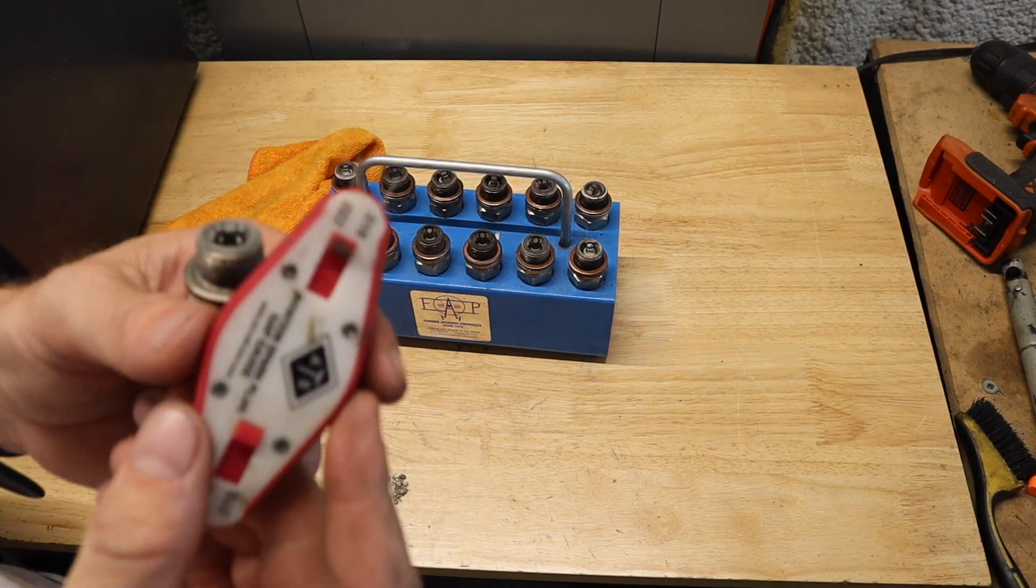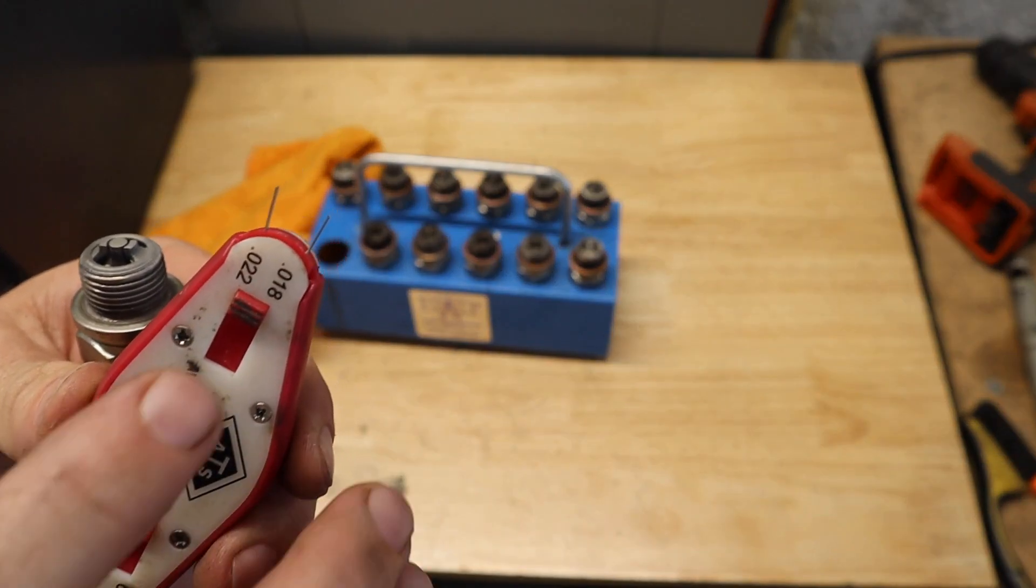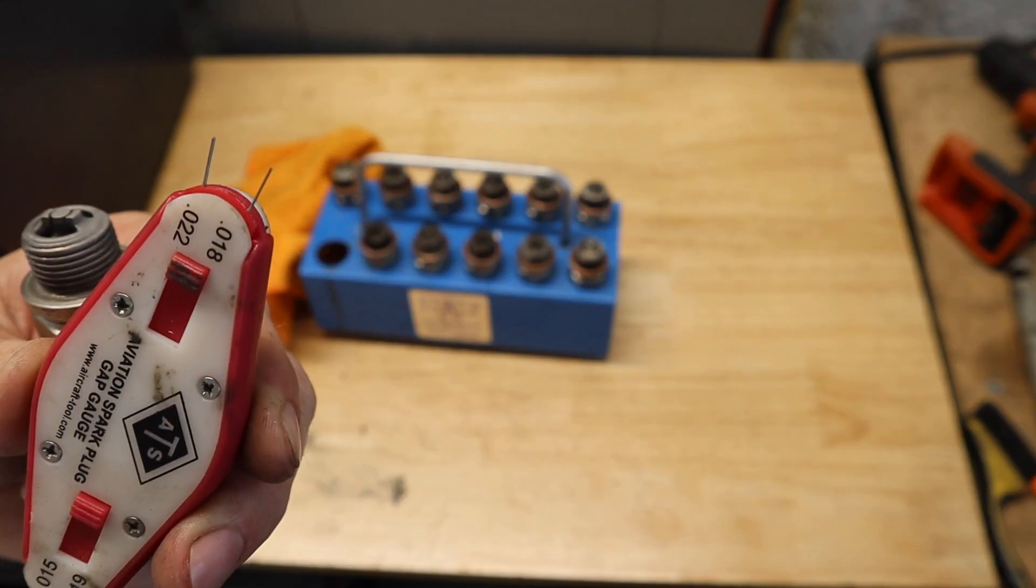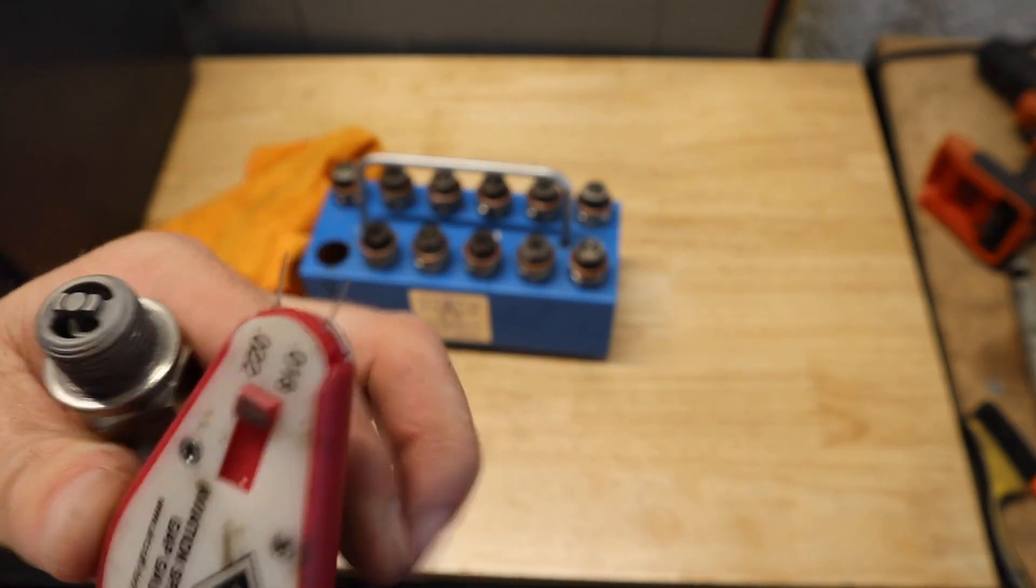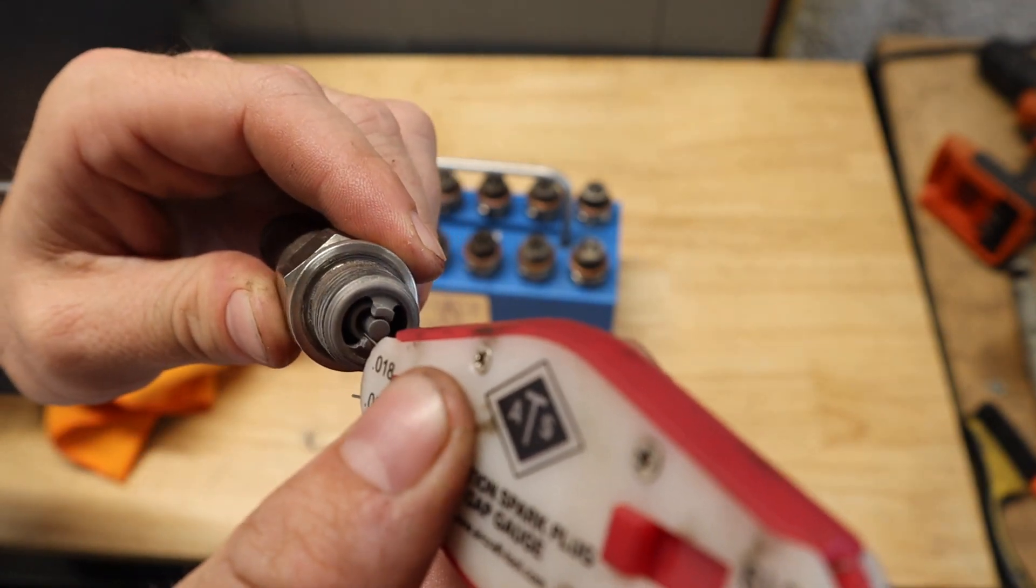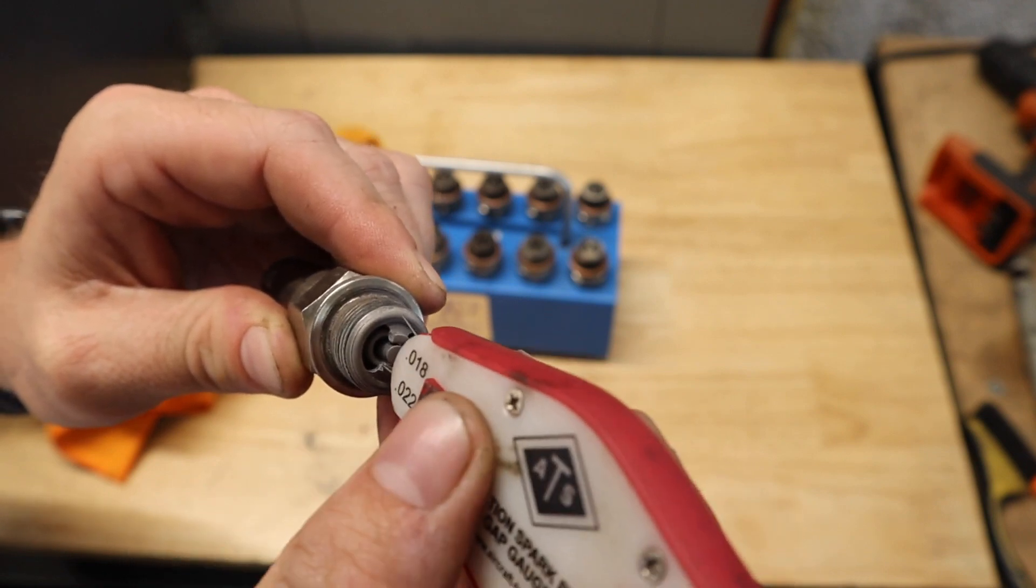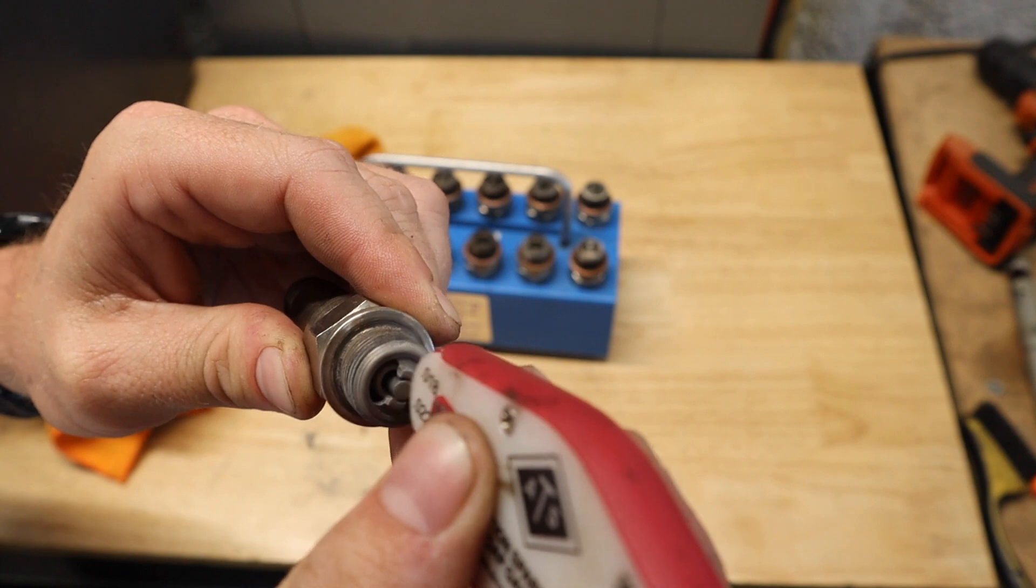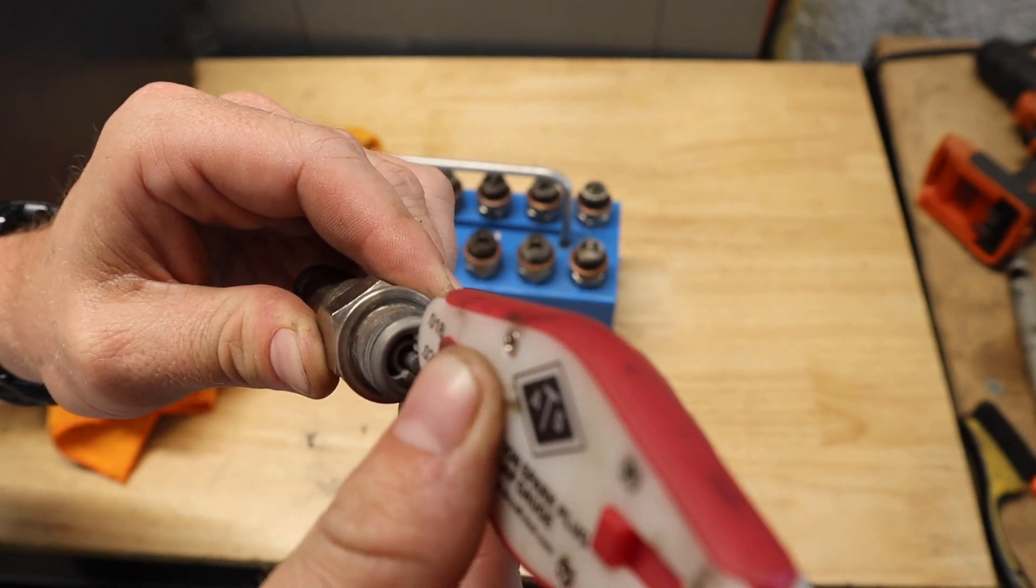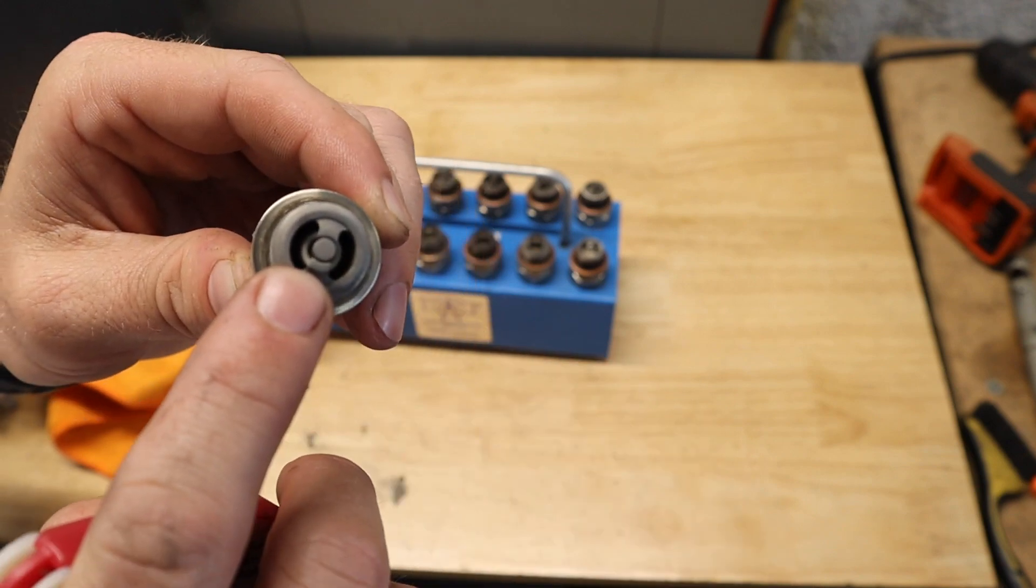I've got this feeler gauge. We've got 18 thousandths on that little wire and 22 thousandths on this wire. You're going to stick it in, and you want to try to get it to where it fits inside there. That 18 just barely fits right through there, and the 22 doesn't. This one doesn't have enough wear.